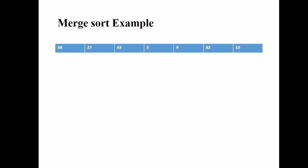Now, let us see an example for Merge Sort. Let me take one array as the example: 38, 27, 43, 3, 9, 82 and 10. This is an unsorted array. We have to sort the array by using the Merge Sort technique.